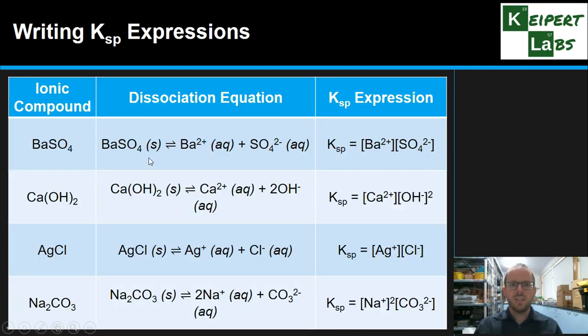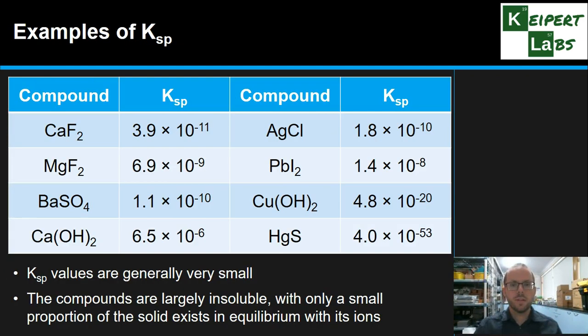Here's just another kind of examples of some ionic compounds. Barium sulfate dissociating into barium and sulfate ions, like this. Calcium hydroxide, you get one calcium to two hydroxides, so we have to have a squared here. That's silver chloride, we get one of each, silver and chloride. Sodium carbonate, we get two sodium ions for every one carbonate ion. So this idea is saying you've got to remember, you've got to look at their coefficients to help write those Ksp expressions.